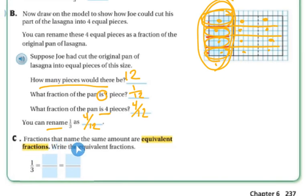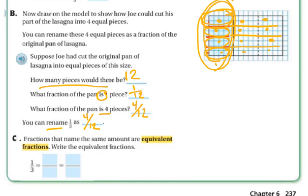Fractions that name the same amount are called equivalent fractions. So write the equivalent fractions — we had three of them. We did one-third, we broke it down into two-sixths, and then we also made it four-twelfths. Those are all equivalent fractions, and it's going to be very important going forward.